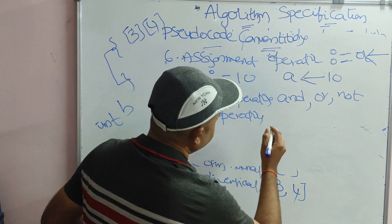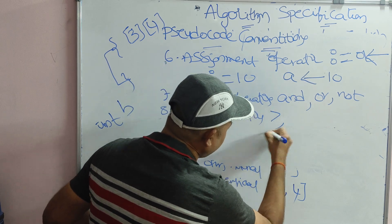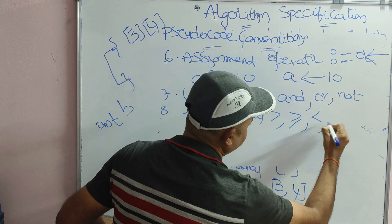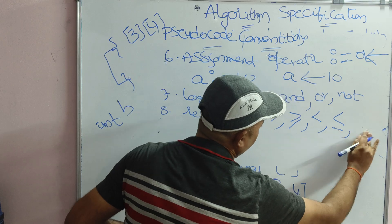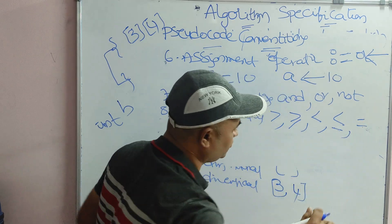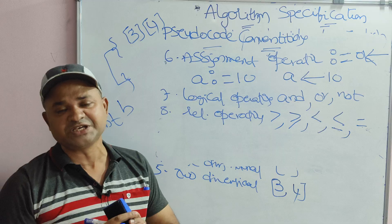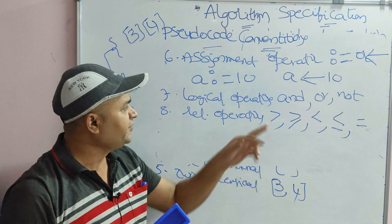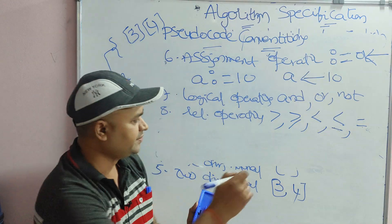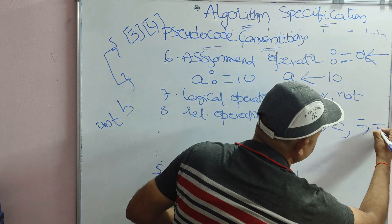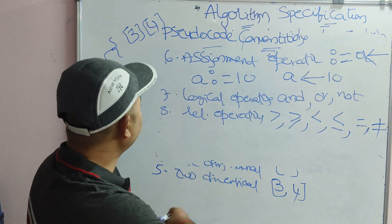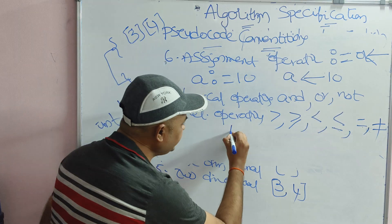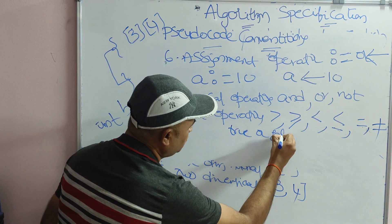Relational operators are denoted by >, >=, <, <=. For equality, we use single equals (=) — there is no need for double equals. In algorithm, single = means the relational equality operator, whereas := means the assignment operator. For not-equal-to, a special symbol is used. Relational and logical operators always return a boolean value: either true or false.